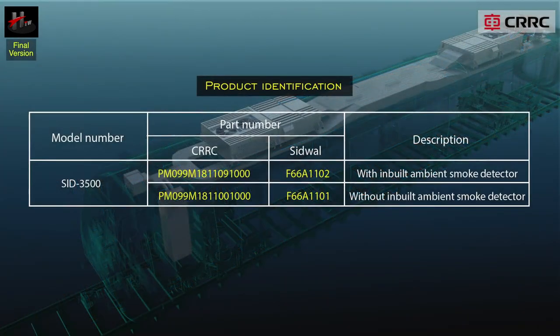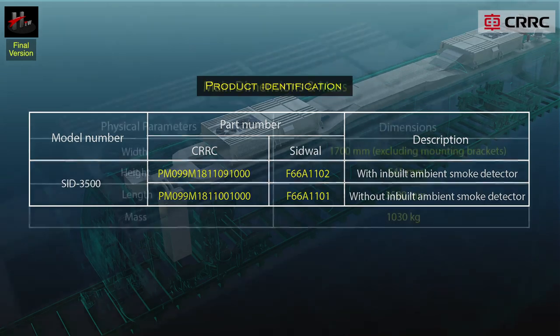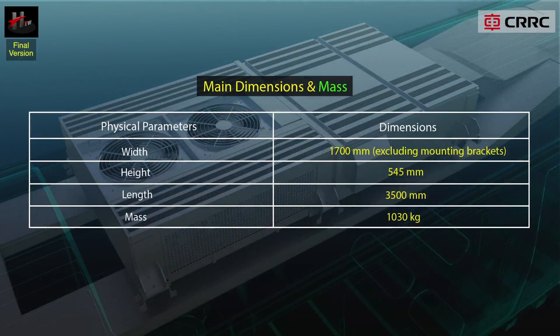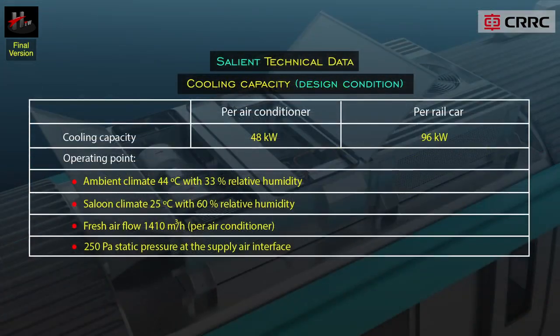The HVAC unit is identified by its model number, part number, and serial number as shown in this table. The main dimensions and the mass of the HVAC unit are shown in the table below. The salient technical data of the HVAC unit is as shown below.